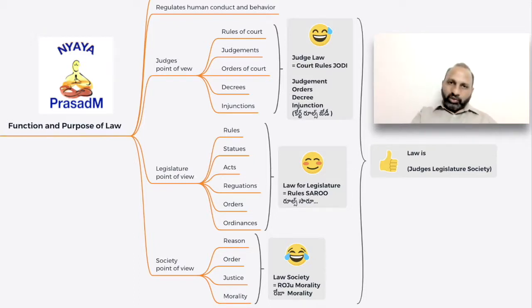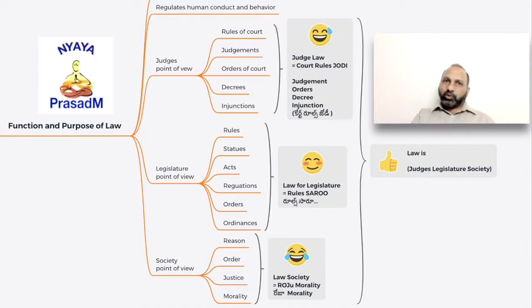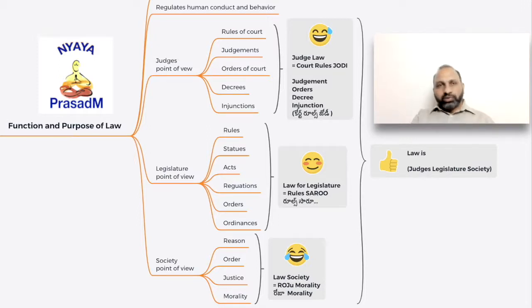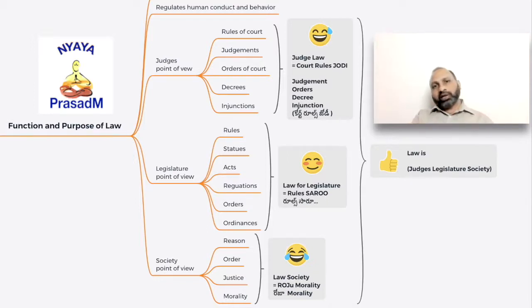From a judges' point of view, remember the mnemonic 'Court Rules JODI,' which expands into rules of the courts, judgments, orders, decrees, and injunctions. Similarly for legislatures, the mnemonic is 'Rules SAROO,' which means rules, statutes, acts, regulations, orders, and ordinances. And the final one, from the point of view of society, which looks for morality in day-to-day life — it is 'Rules of Morality' or ROJU, which stands for Reason, Order, Justice, and Morality.